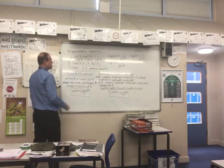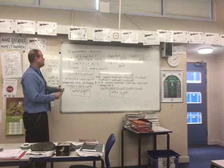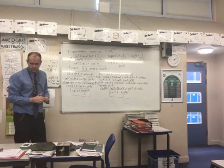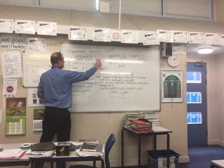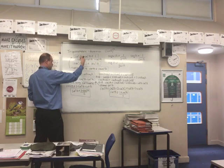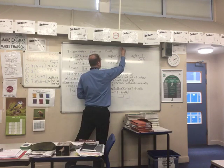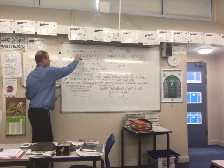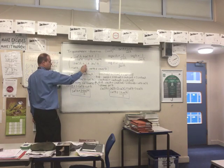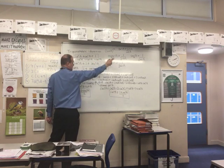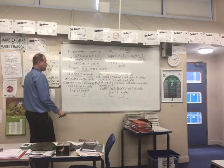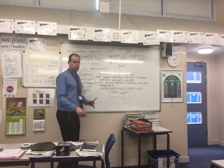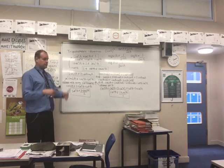From sin²A + cos²A = 1, I can generate two more identities. If you divide everything by cos²A, sine over cos gives you tan, so you get tan²A + 1 = sec²A. This identity is very useful for solving trigonometric equations and for making integrations easier.